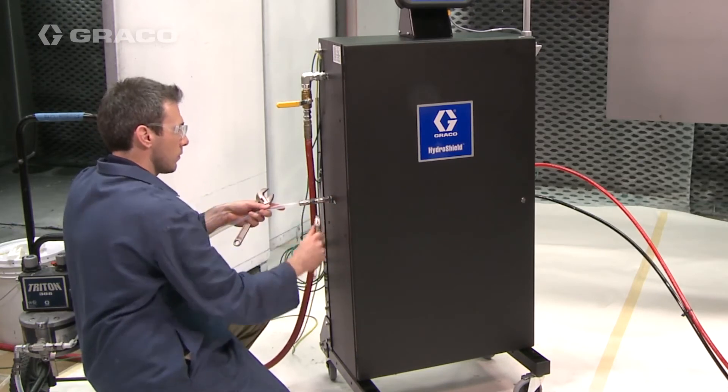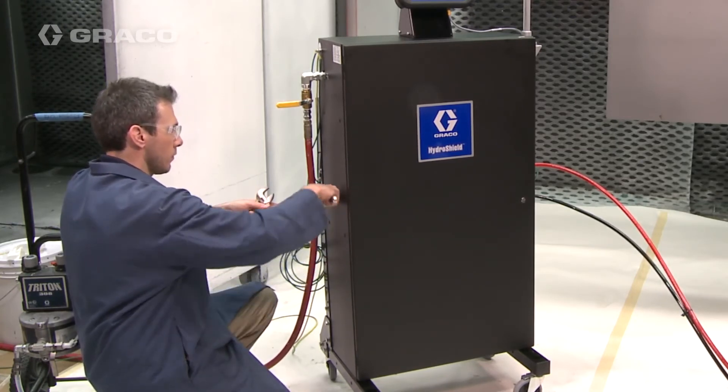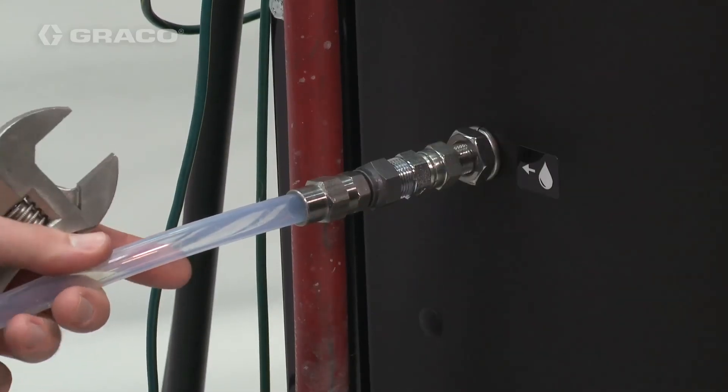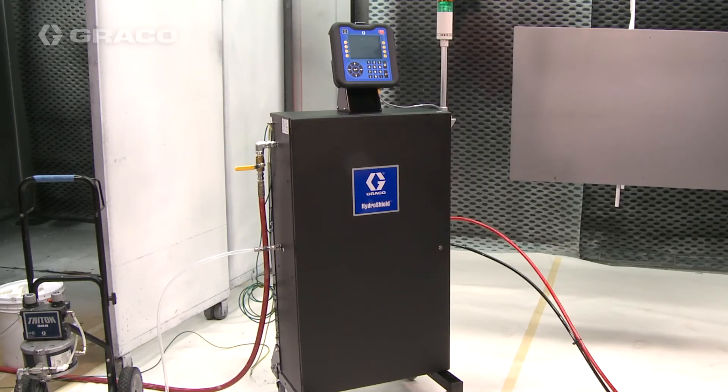For faster fill times, use a large and short supply line between the supply pump and the cabinet to minimize pressure drop. Also, use a large suction tube on your supply pump.